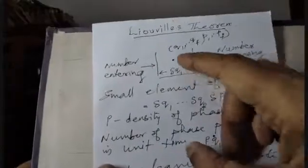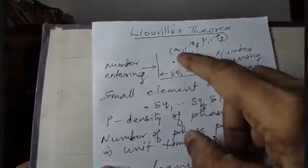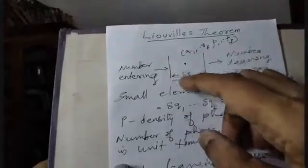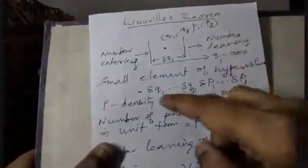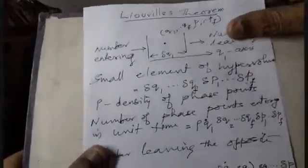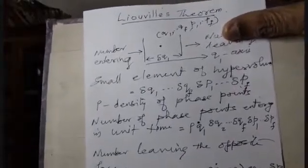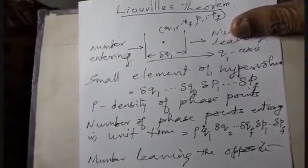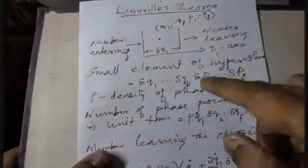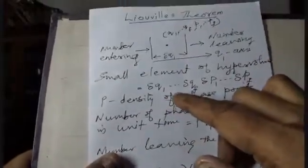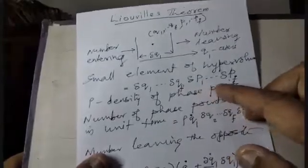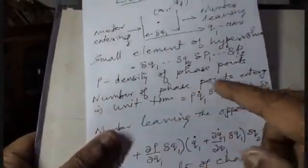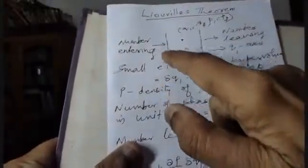We define rho at a point with coordinates q1, q2 ... qF, p1, p2, p3 ... pF as the density of phase space. For a small element of hypervolume — analogous to the volume element dx dy dz in Euclidean space — the phase space hypervolume element is the product: delta-q1 into delta-q2 ... into delta-qF into delta-p1 into delta-p2 ... into delta-pF.